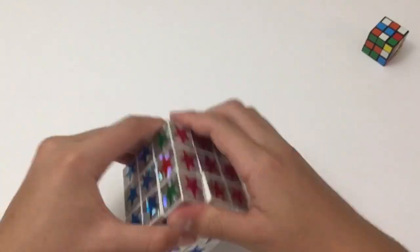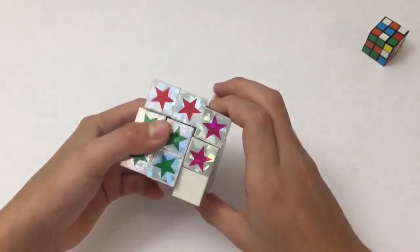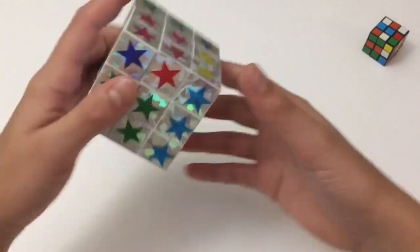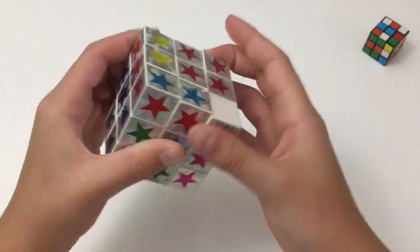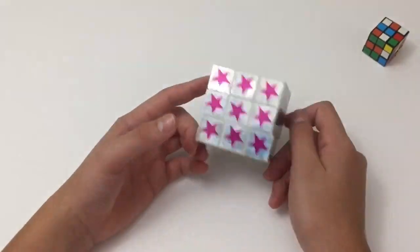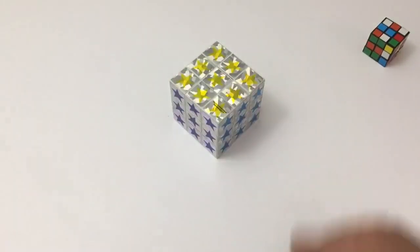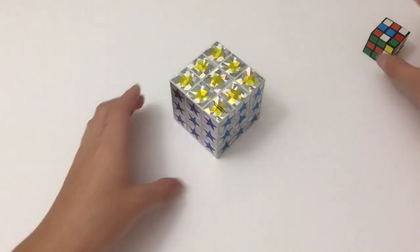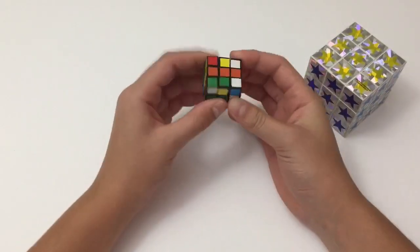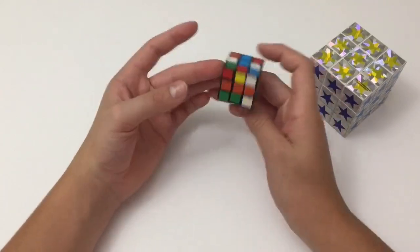So this cube turns really not the best. I tried fixing it and lubing it but it still doesn't work the best. So there was big cube solve. Now let's solve this tiny cube. Let's get started.